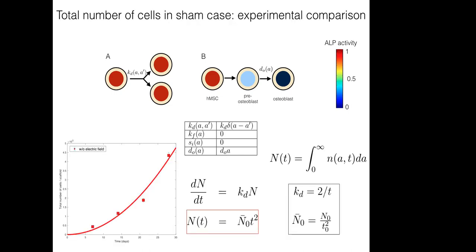With these choices for k_D and d_0, one can derive the time rate of change of capital N, the total number of cells, which depends simply on the cell division rate k_D. If we use k_D = 2/t — meaning the cell division rate decreases with time — the solution for dN/dt gives N proportional to t², exactly the function that describes the time-dependent behavior of the total number of cells.